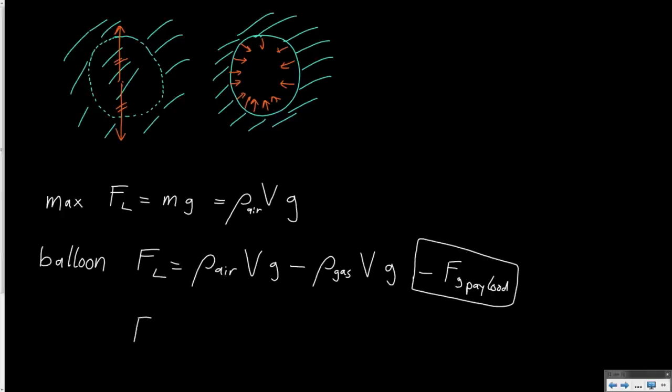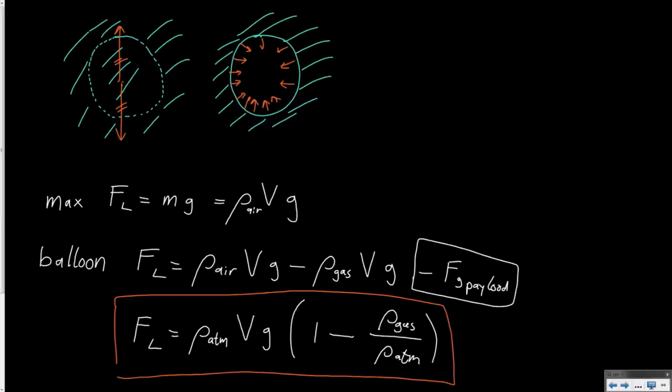I can write this another way: the lift force is rho atmosphere times V times g times (1 minus rho gas divided by rho atmosphere). This, in its generic form, is the equation which governs the lift of balloons, both hot air as well as gas balloons.